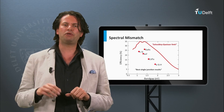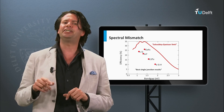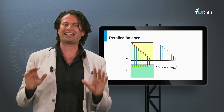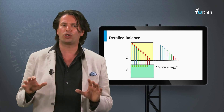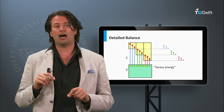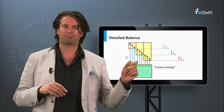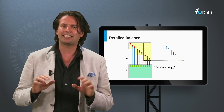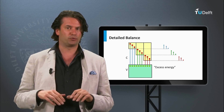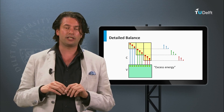Later in this course we will discuss various concepts which might allow us to pass the Shockley-Queisser limit. A way to reduce the amount of excess energy is to use more than one semiconductor material, often referred to as a multi-junction. This allows us to use more than one band gap and the match with the solar spectrum improves. As you can see in this example, the excess energy can be reduced significantly and the spectral utilization improves. We will discuss such multi-junction concepts in greater detail in week 5.